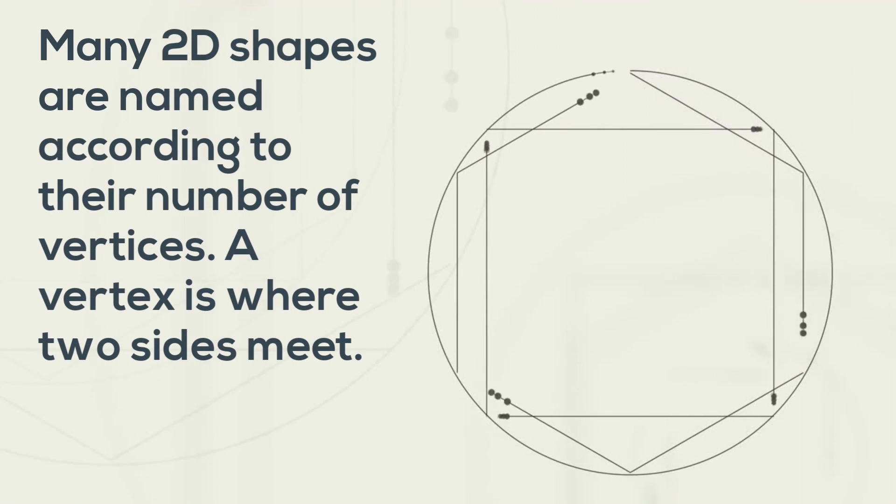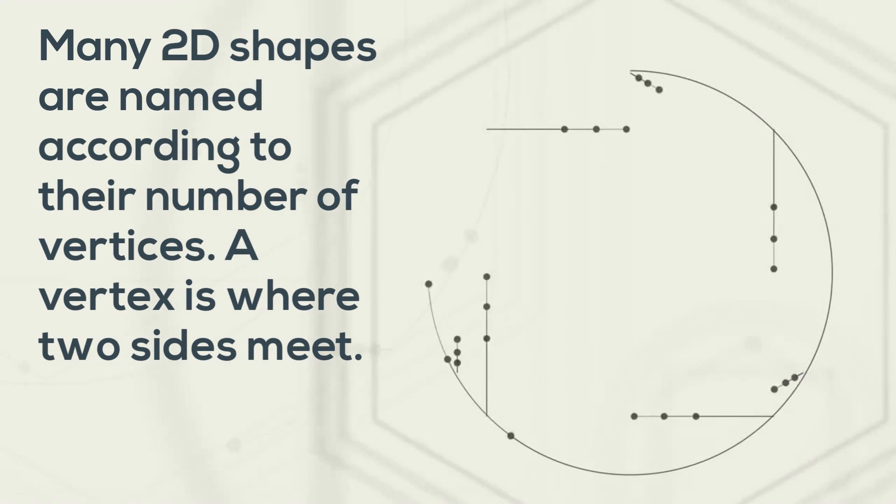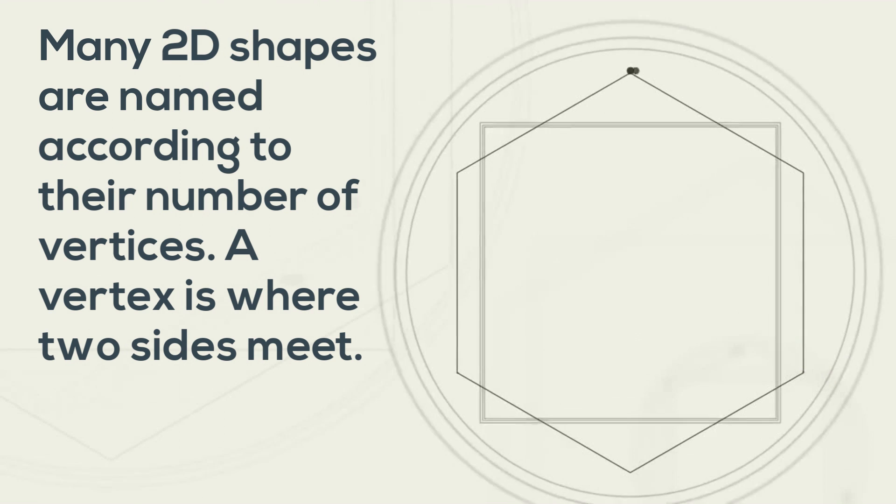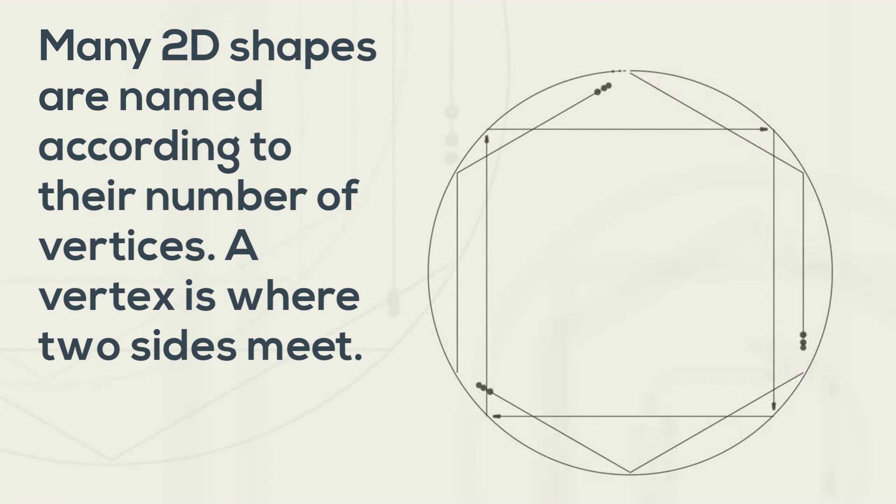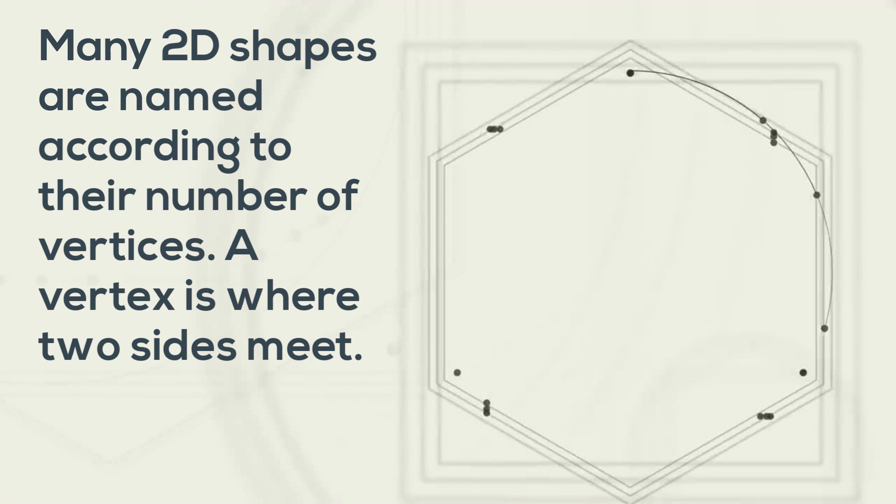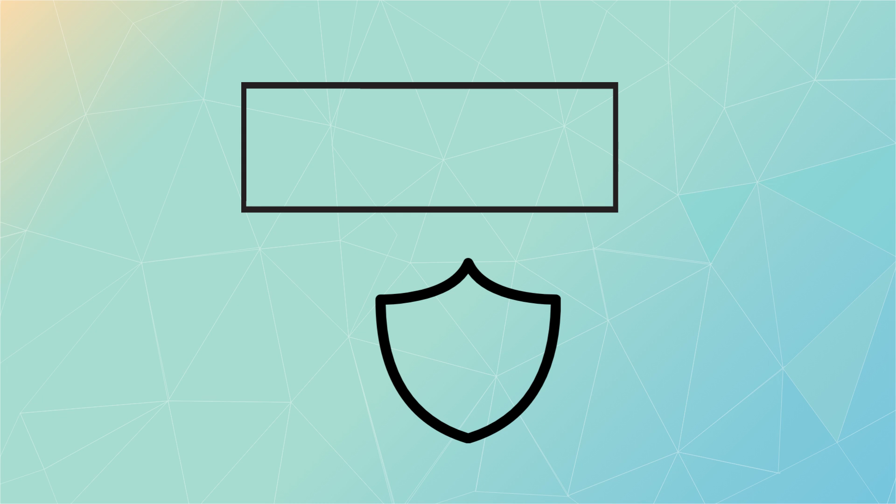Many 2D shapes are named according to their number of vertices. A vertex is where two corners meet. And here is an example of two different vertexes.